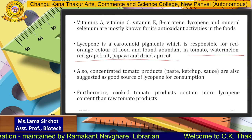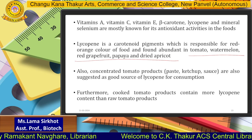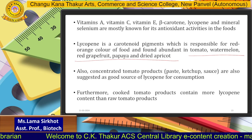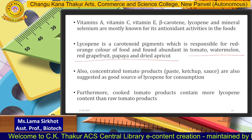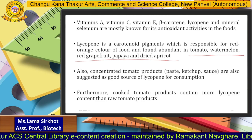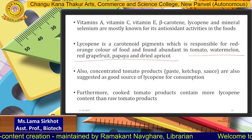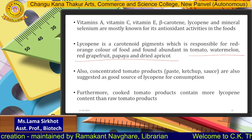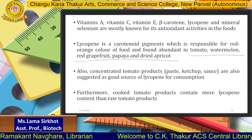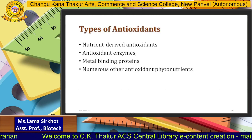For children or picky eaters who would not consume raw fruits, concentrated tomato products like paste, ketchup, or sauce can be a practical way to consume lycopene. Through that, you can actually consume antioxidants as a form of nutraceutical therapy. Furthermore, cooked tomato products contain more lycopene content than raw tomato products, so ketchup, paste, and sauces will have considerably higher lycopene content compared to raw tomatoes.